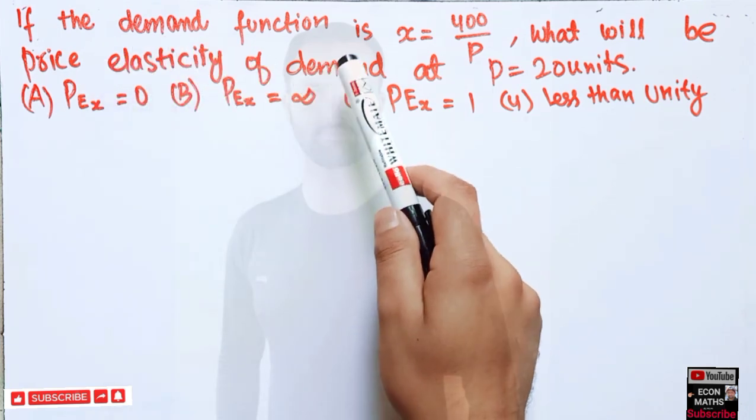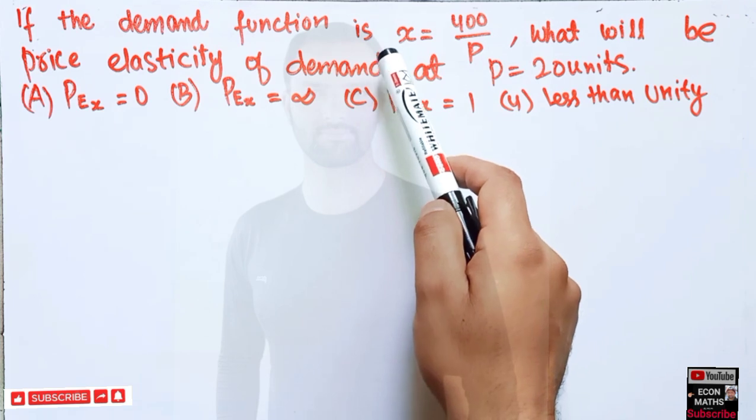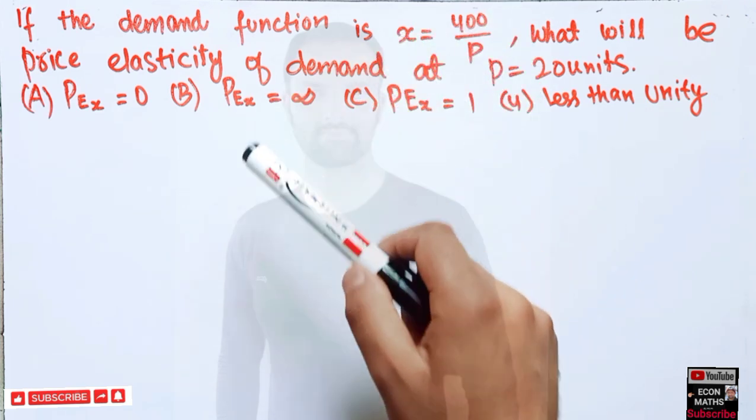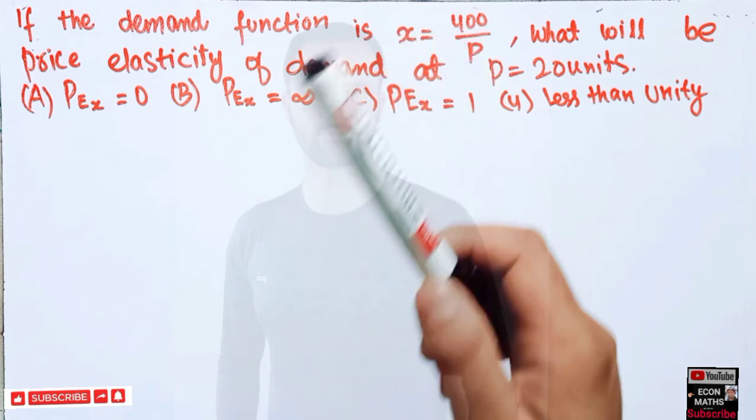If the demand function is given as x equals 400 upon p, where x is the commodity and p is its price.